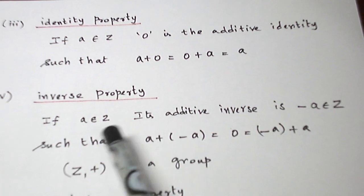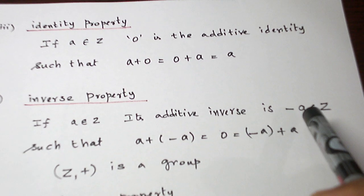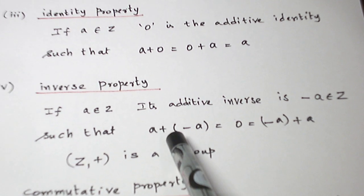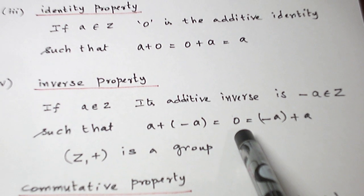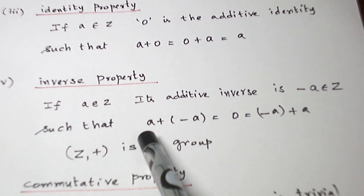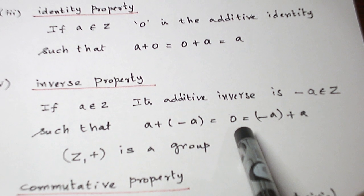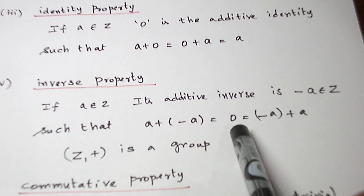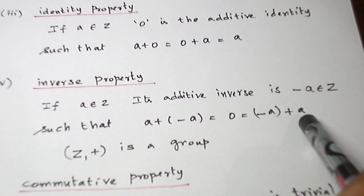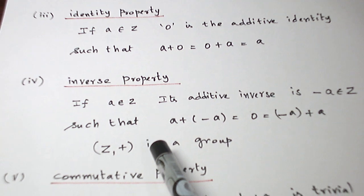Inverse property. If A belongs to Z, then naturally the additive inverse is minus A. Let us verify. Element with its inverse must give the identity, which is 0. So element A with inverse minus A gives 0, the additive identity. Similarly, inverse plus element is also the identity. So the four properties are verified.